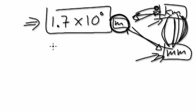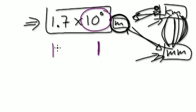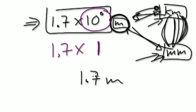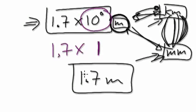The average height for a human being is 1.7 times 10 to the power of 0. Now, 10 to the power of 0 is 1, so you can imagine this as 1.7 times 1, which is 1.7 meters. So an average human being is 1.7 meters.